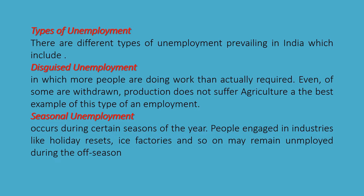In disguised unemployment, more people are doing work than actually required. Even if some are withdrawn, production does not suffer. Agriculture is the best example of this type of unemployment.